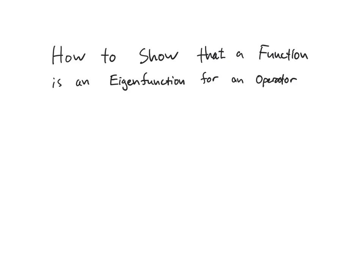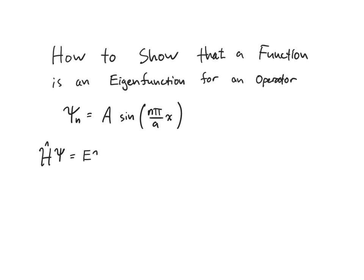The example that we're going to use are the solutions to the particle in a box — the one-dimensional particle in a box — which is some constant A times the sine of an integer n times pi over a, all times x. And we want to prove that the Schrödinger equation actually has this function as a solution.